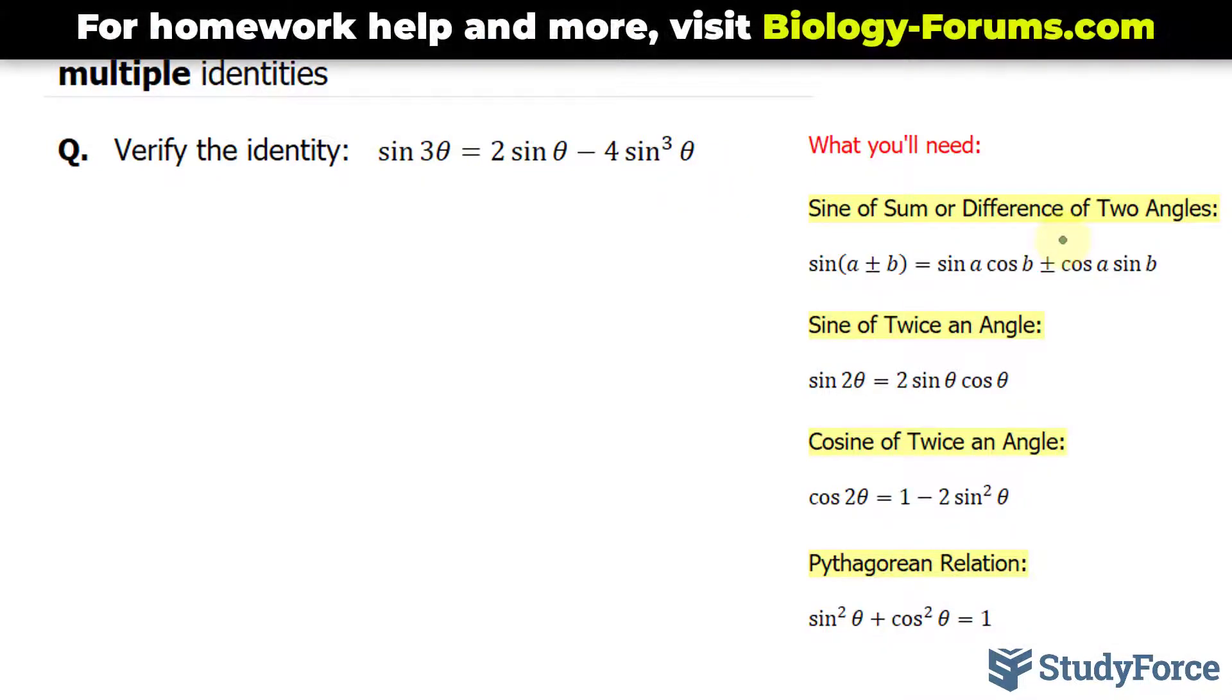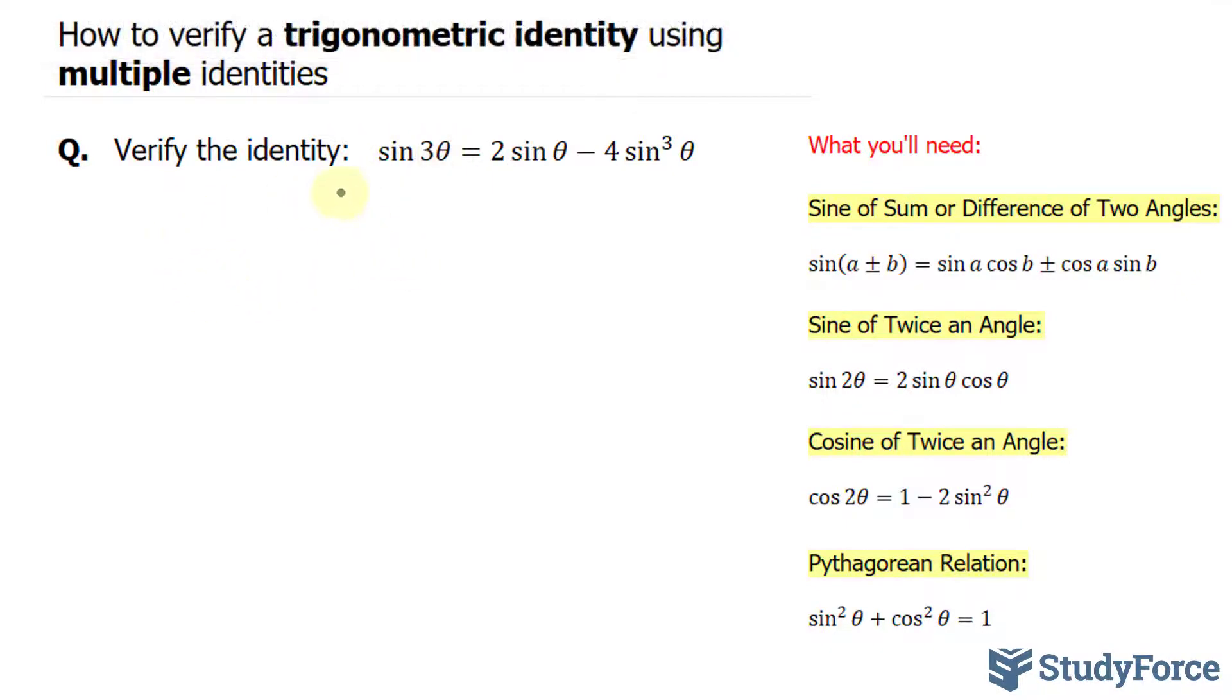The first identity I want to use is the sine of sum of two angles. So here I have sin 3θ. I'll rewrite it as sin(2θ + θ).